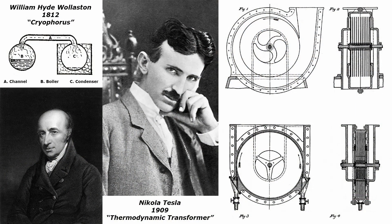In 1812, William Hyde Wollaston brought out a scientific apparatus called a cryophorus. The device consists of a boiling flask containing water, a condensing flask packaged in ice, and a channel to join the two flasks. An external vacuum pump is connected to the channel and a high partial vacuum is applied. The high partial vacuum causes the water in the boiling flask to evaporate into cold steam, and it travels through the channel to the condensing flask where it condenses back to water.